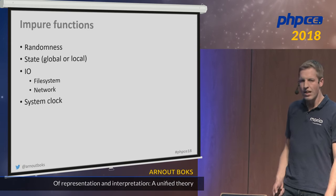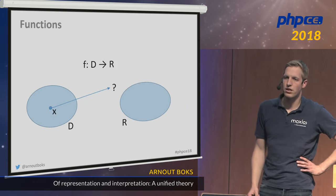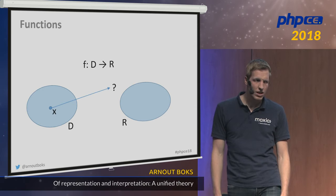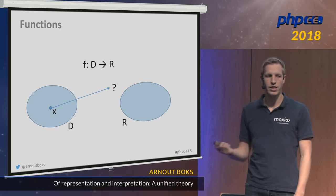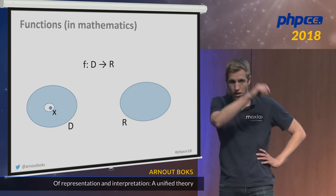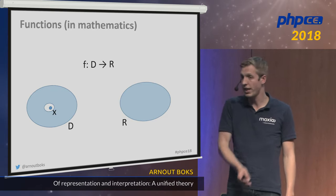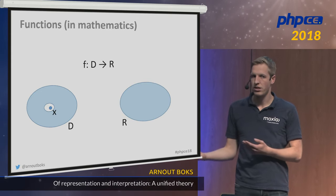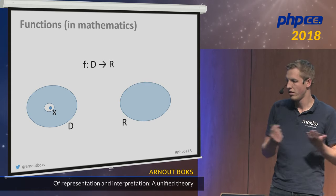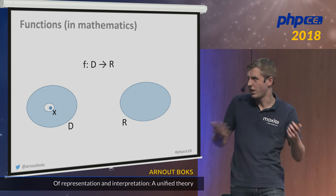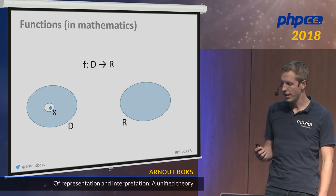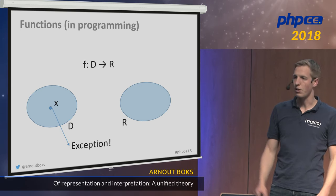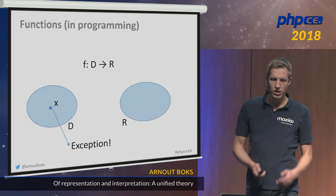There's another problem: it might happen that there is a value in our domain that we cannot map to a value in the range. Mathematicians have an easy solution — they just cut a hole in the domain. But since mapping mathematical sets to types in programming isn't easy — we don't have a type that says 'any number except zero' — we instead keep the original domain and if we put such an x in our function, it just throws an exception.